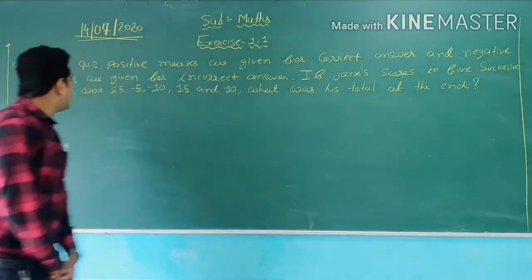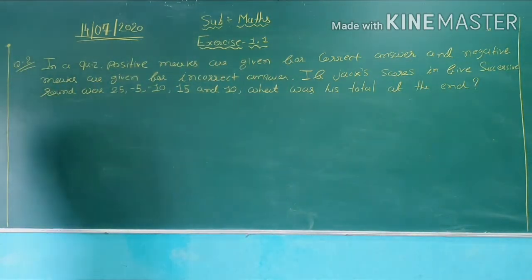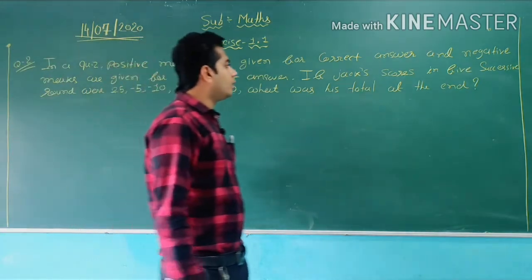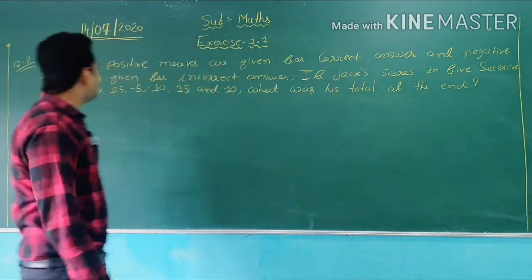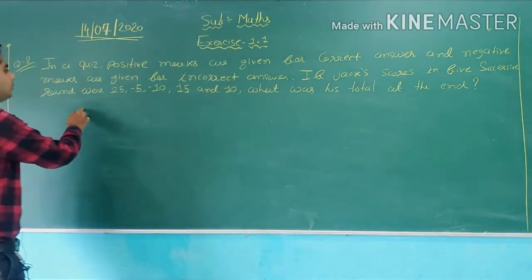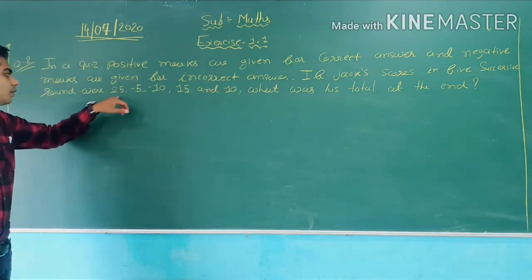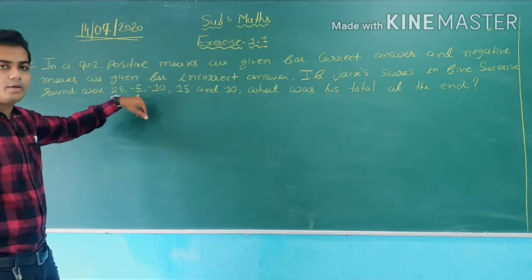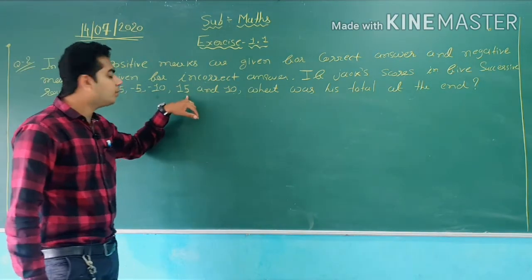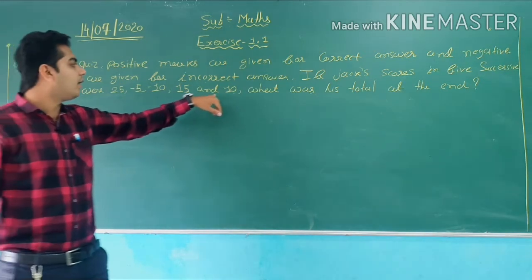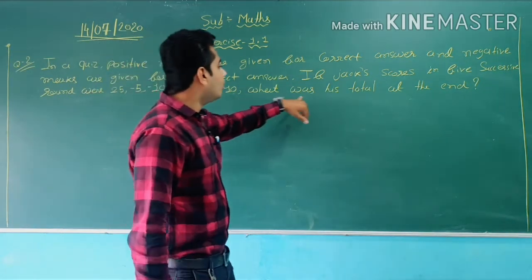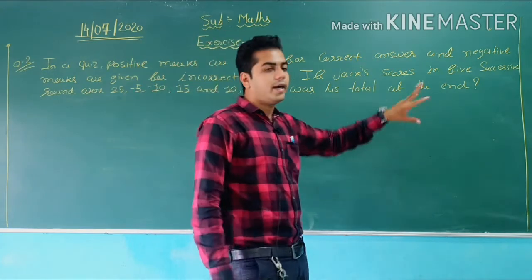What does question number 2 say? It says: in a quiz, positive marks are given for the correct answer and negative marks are given for the incorrect answer. If Jack scores in five successive rounds — the first round he gets 25, in the second round minus 5, in the third round minus 10, in the fourth round 15, and the last round plus 10. So what was his total at the end?